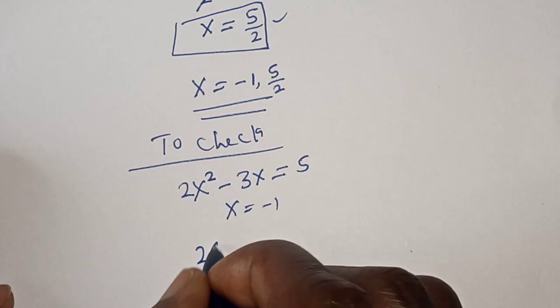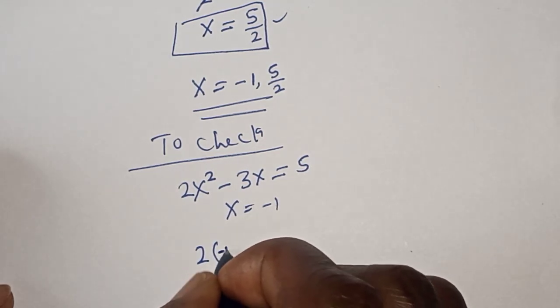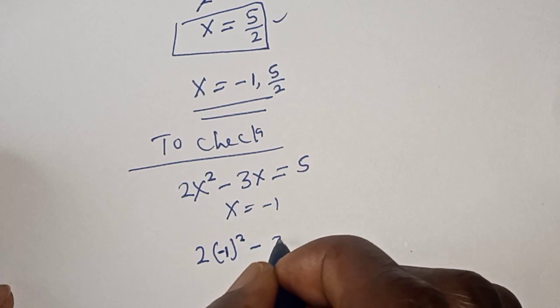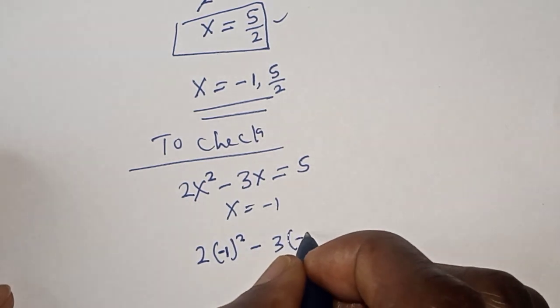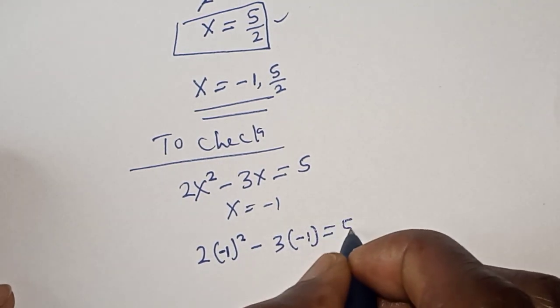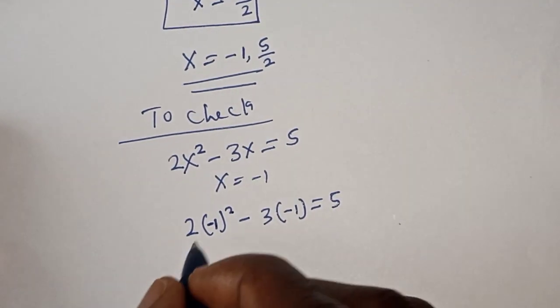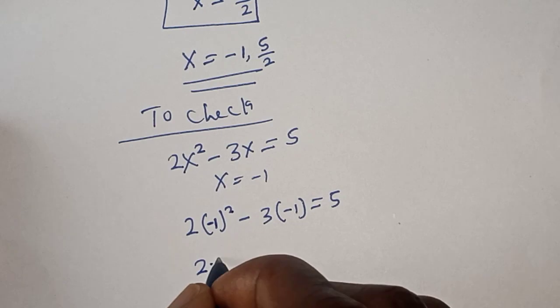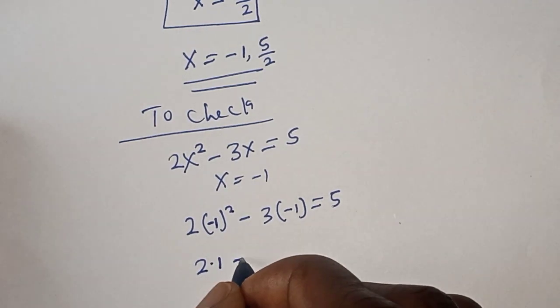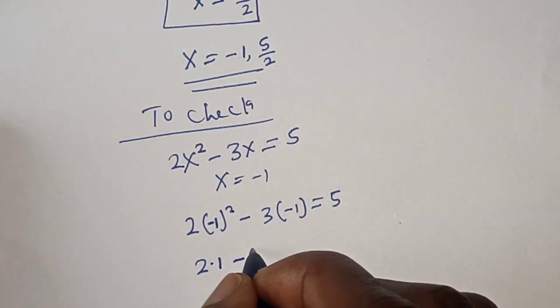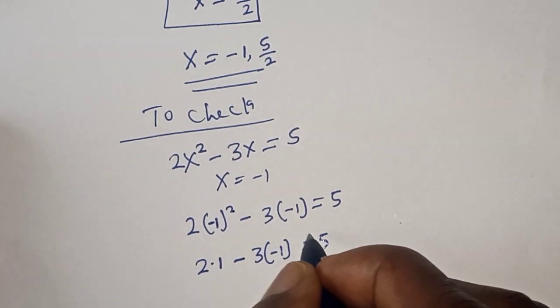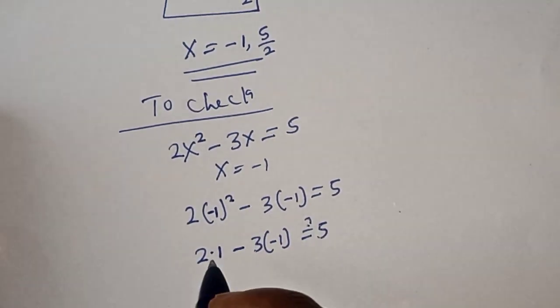2(-1)² - 3(-1) = 5. 2 multiplied by (-1)² is 1, so 2(1) - 3(-1) = 5. 2 times 1 is 2.